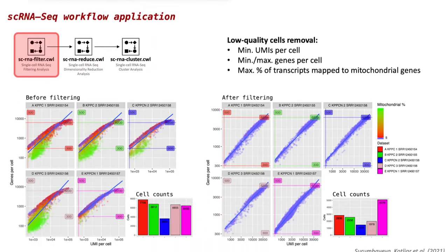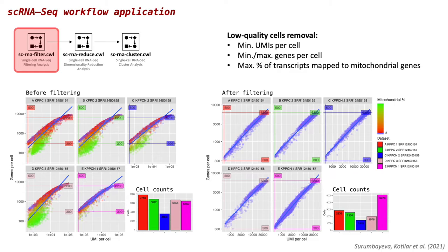As a real use case scenario, we applied our single cell RNA-seq pipeline in the study of pancreatic cancer differentiation. The results of the project have been recently published in the STAR protocol journal. In that study, we jointly analyzed five single-cell datasets, three from the classical cancer subtype and two from the basal subtype.